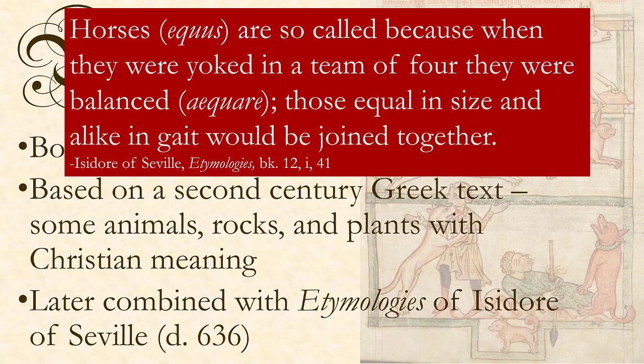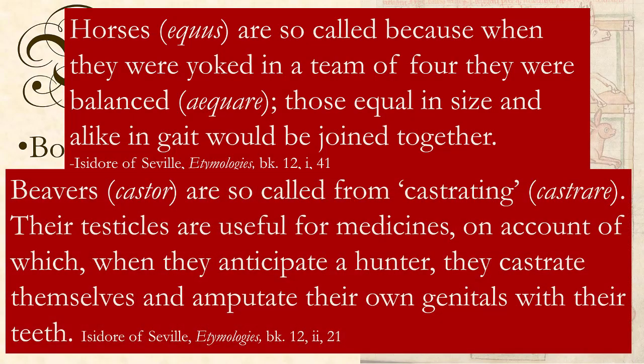He also says some wacky things. He talks about beavers — castor — saying they are so-called from castrating, castrare. Their testicles are useful for medicines, and when they anticipate a hunter, they castrate themselves and amputate their own genitals with their teeth. Isidore got this kind of information from the Physiologus and from people like Pliny the Elder, a Roman author who wrote Natural Histories — also often wrong. Later bestiary authors would take ideas from both the Physiologus and Isidore and combine them into these amazing books.